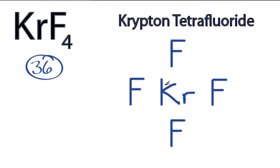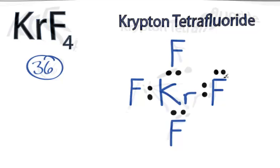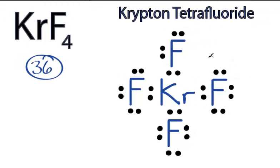We have 36 valence electrons. We'll put two between atoms to form chemical bonds, and then we're going to go around the fluorines to fill their octets, or until we run out of valence electrons. So we have 2, 4, 6, 8, 10, and 32. So we've used 32, and everything has an octet now.